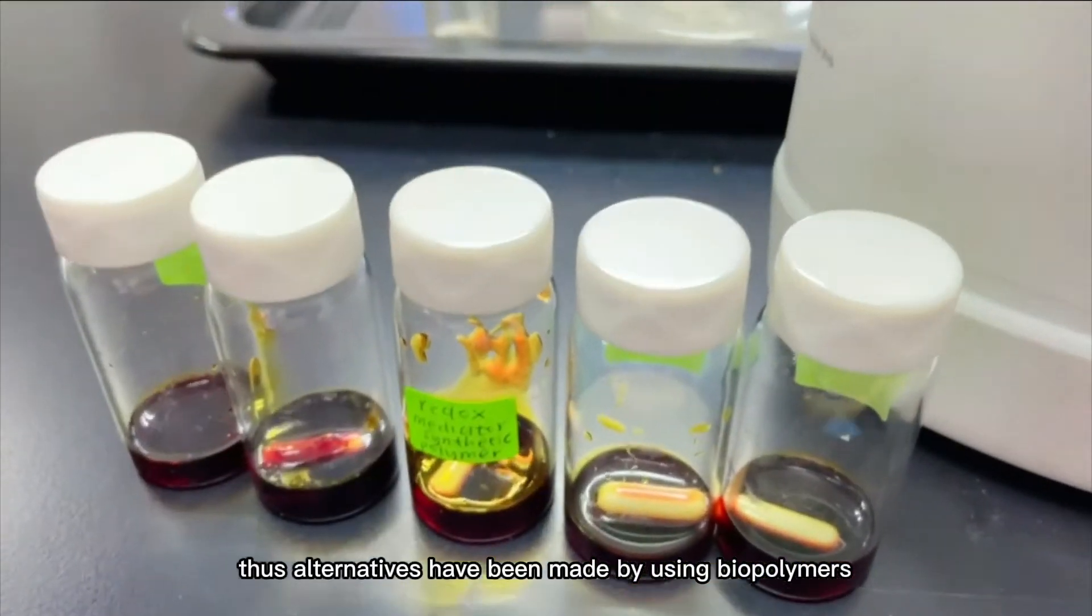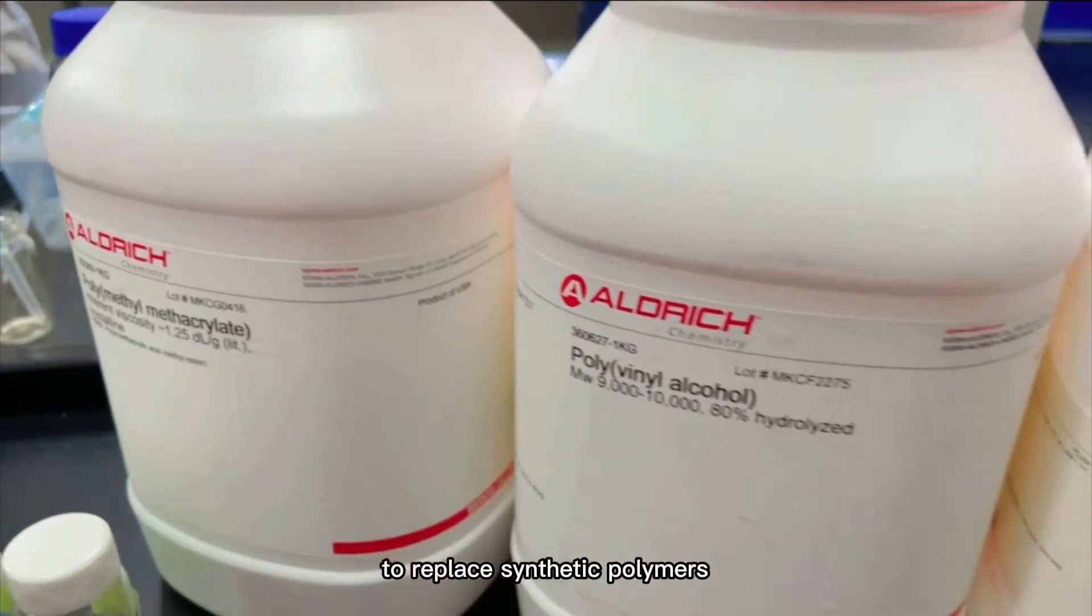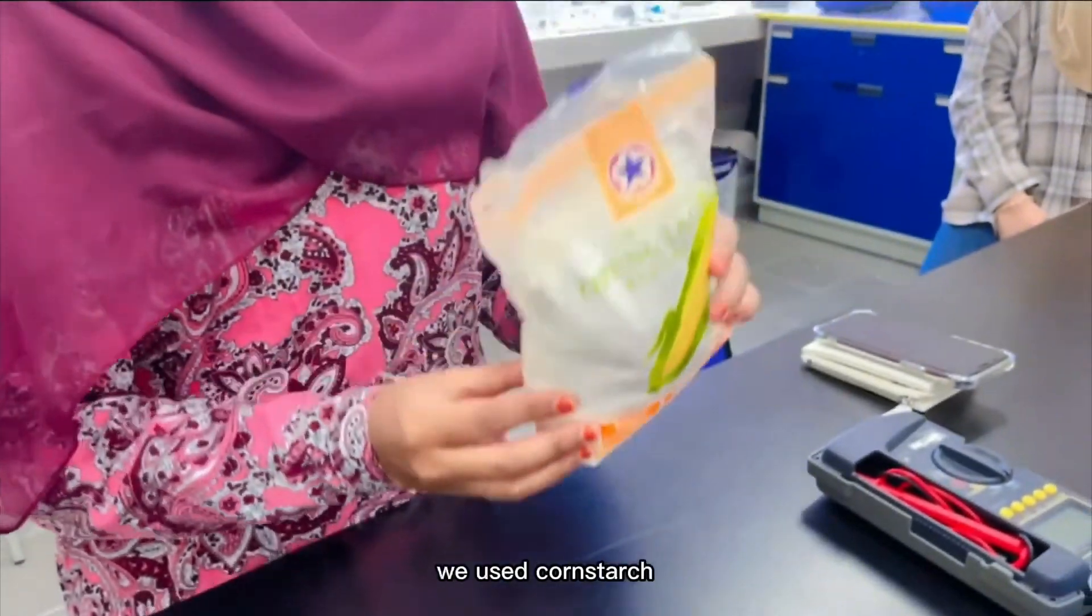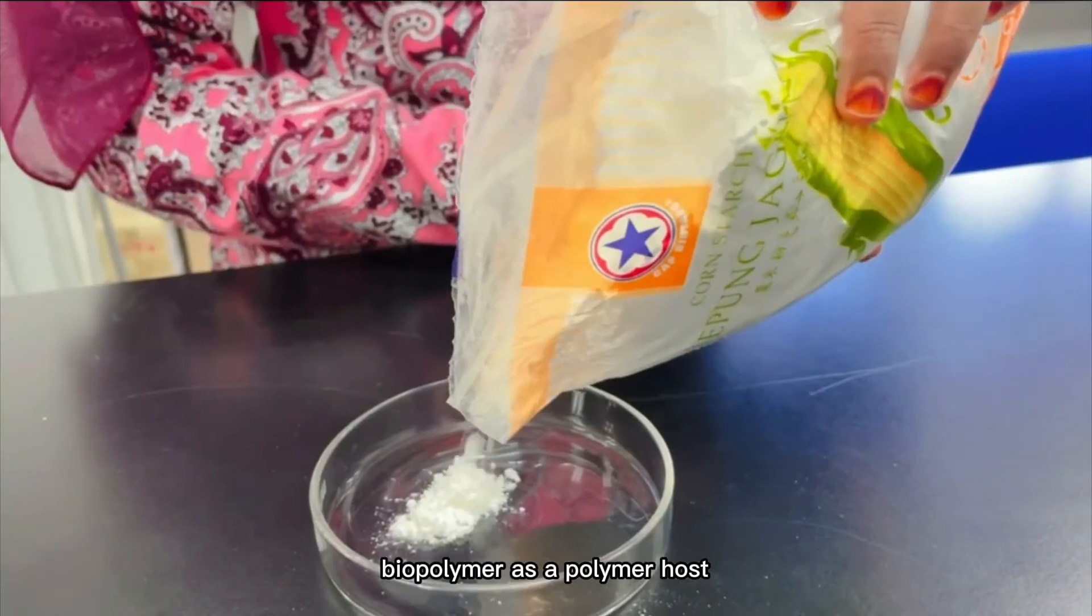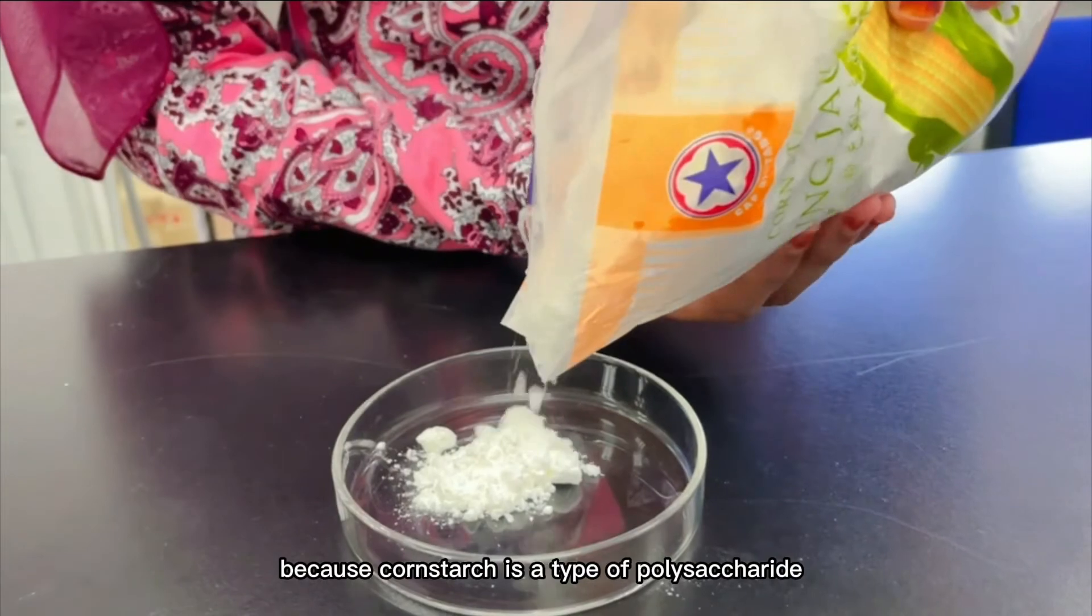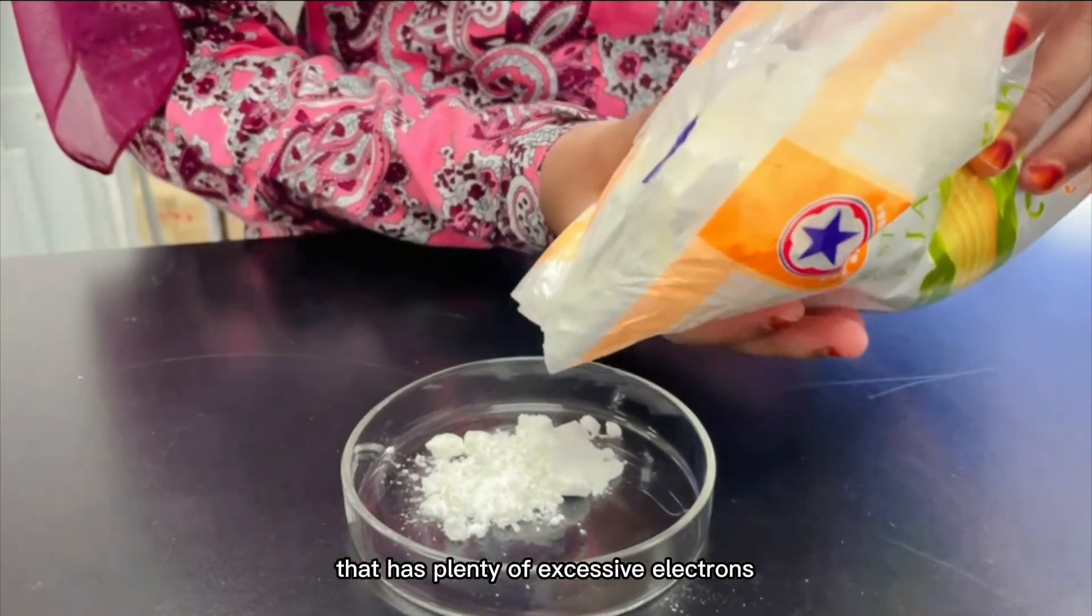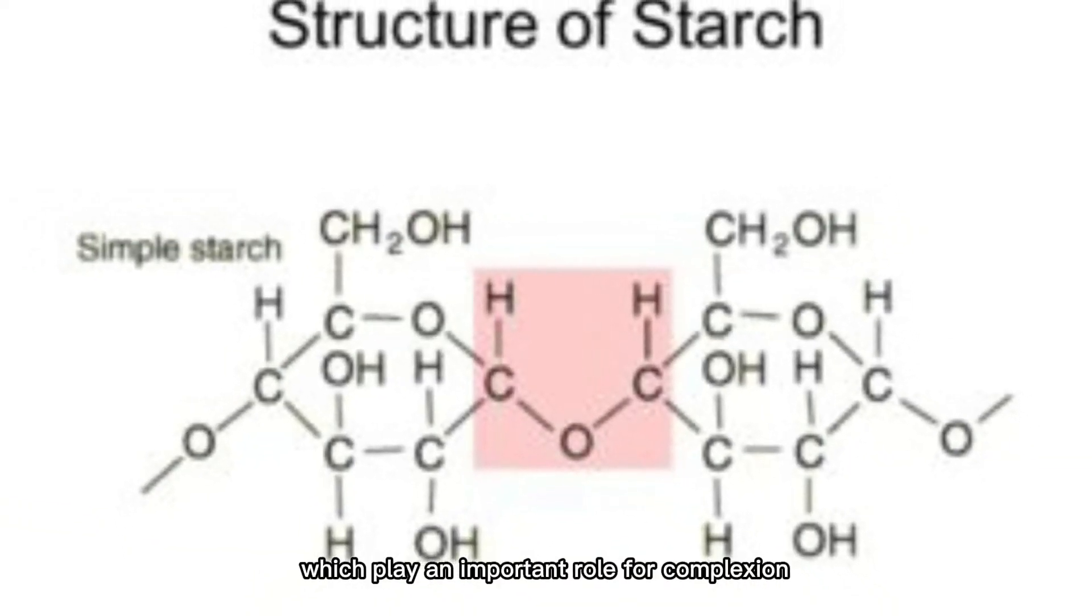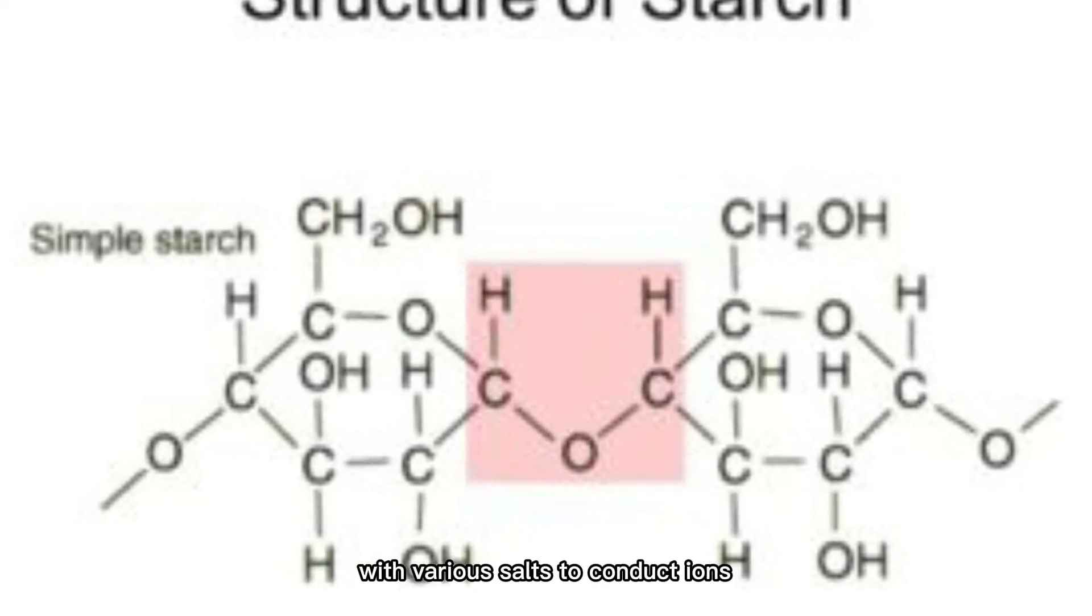Thus, alternatives have been made by using biopolymers to replace synthetic polymers. In this work, we used cornstarch biopolymer as a polymer host. Cornstarch was chosen because it is a type of polysaccharide that has plenty of excessive electrons which play an important role for complexion with various salts to conduct ions.